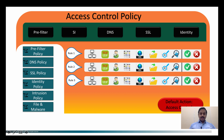Rule one, rule two, and rule three are the user-defined access rules. These are defined by the user with various parameters: network IP address, zones, TCP, user identity, application, URL filtering, file inspection — all these things are defined on access rules.